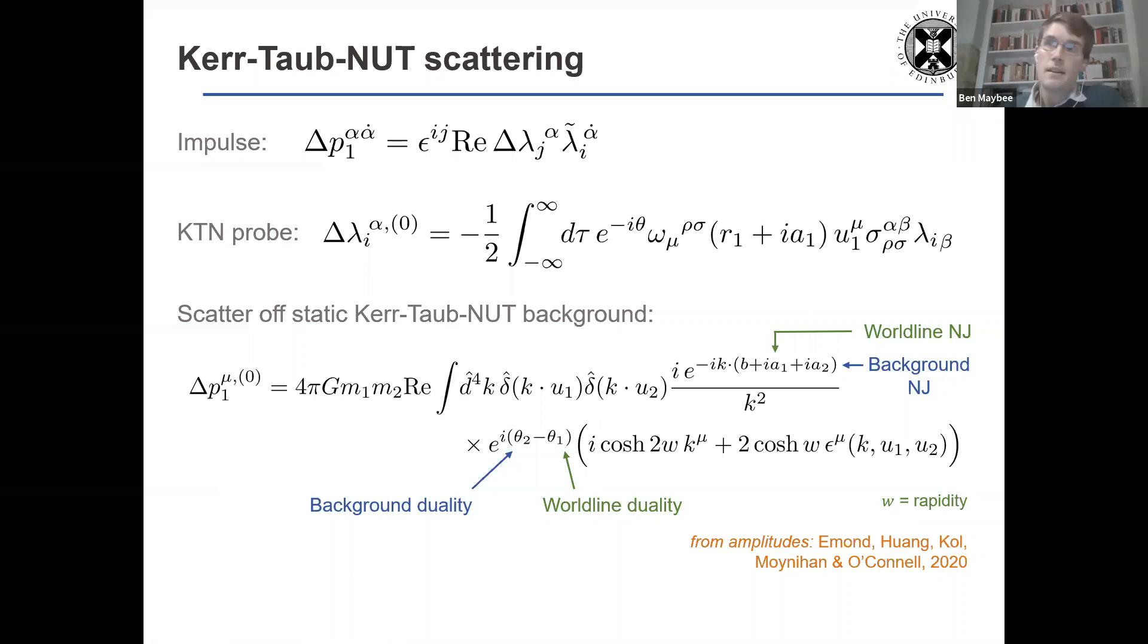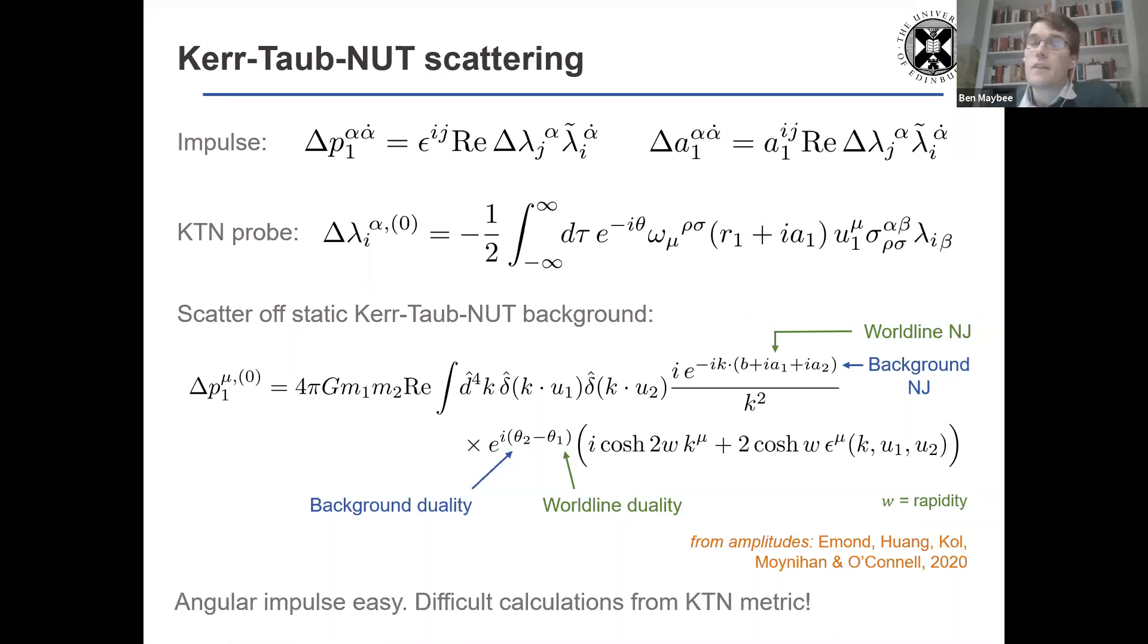But it's just, again, like with root Kerr, it's just as easy with spinor equations to do this for both of them, having magnetic charges and both of them spinning. It's also very easy to calculate the angular impulse. So the change in the spin vector.